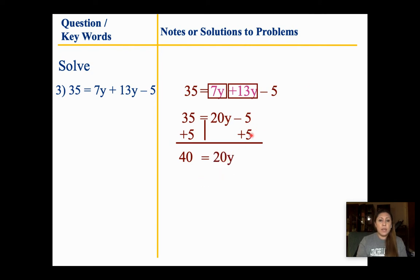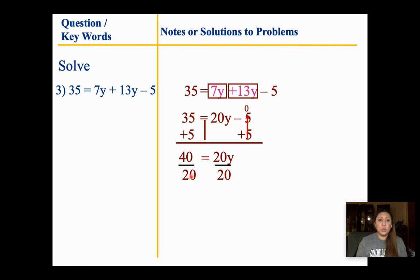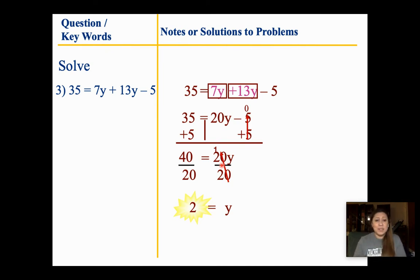The negative 5 plus 5 cancels out. I look at my variable — there's my coefficient, which is 20. I divide both sides by 20. 20 goes into 40 two times, and that equals y because 20 divided by 20 is 1. So my answer is y equals 2. It doesn't matter that it was written that way — it could be written either way, as long as you pay attention to the signs.